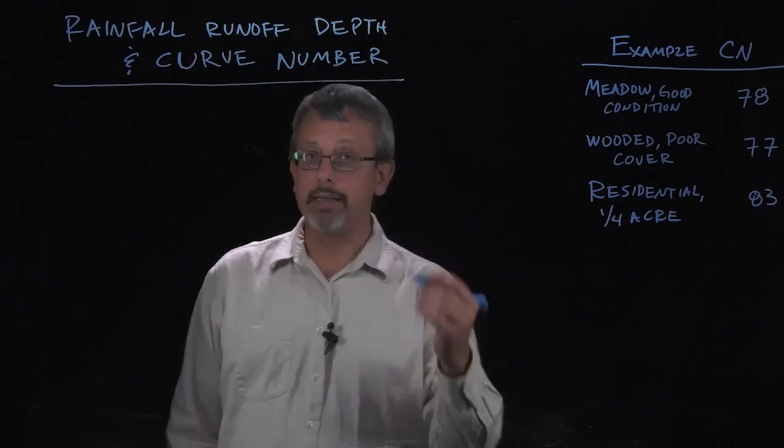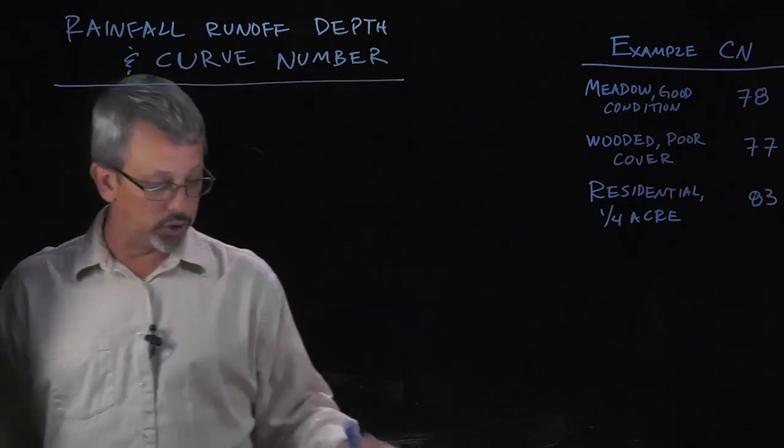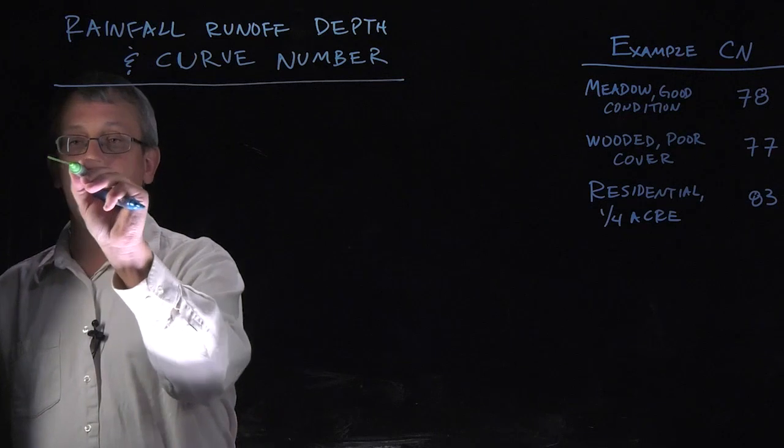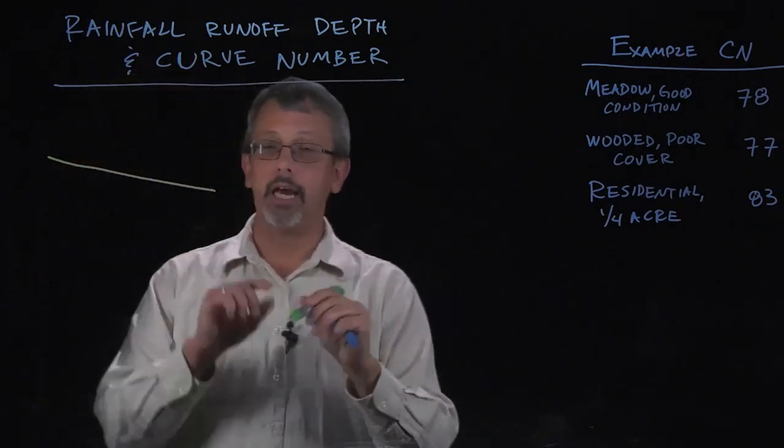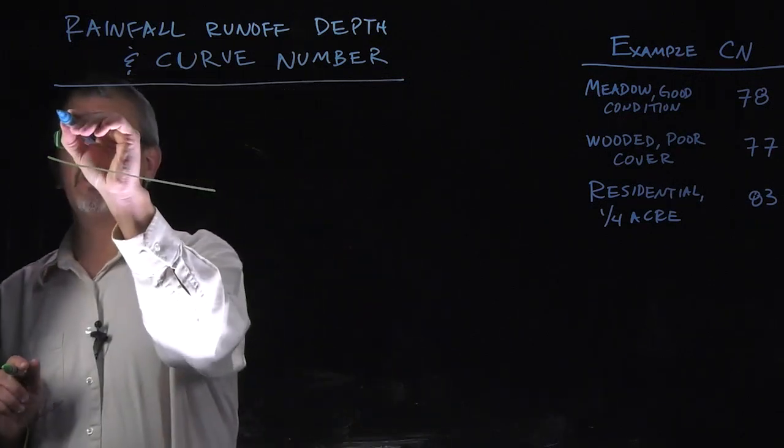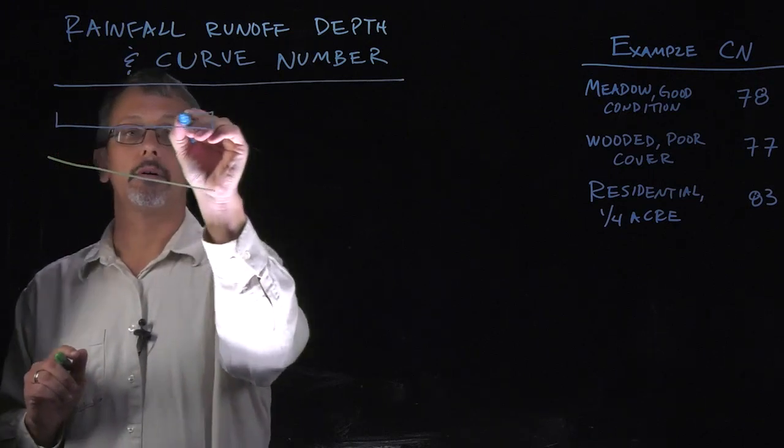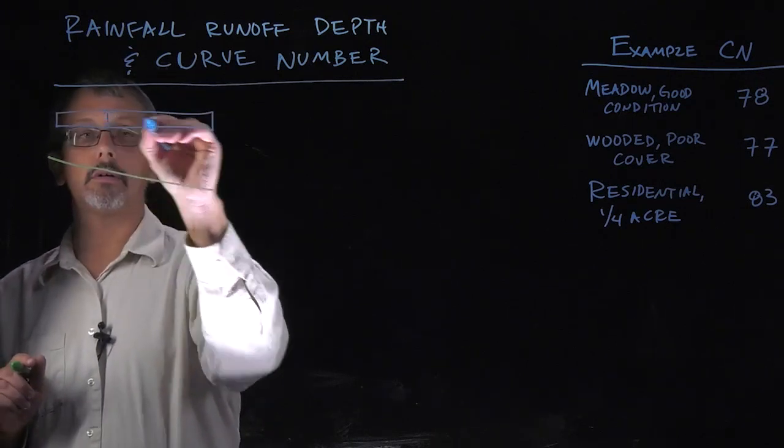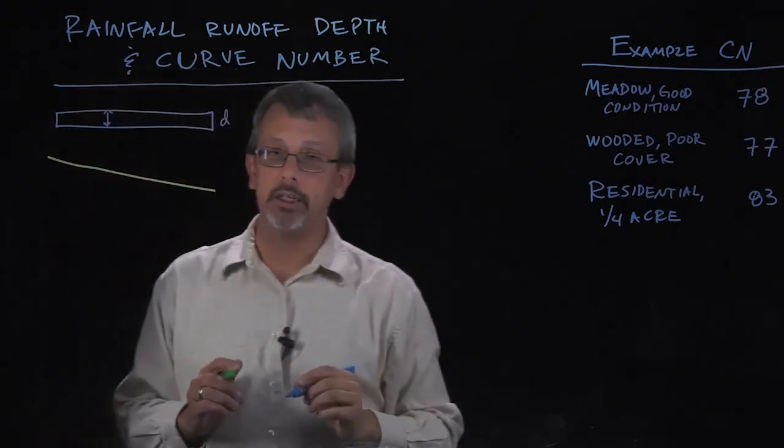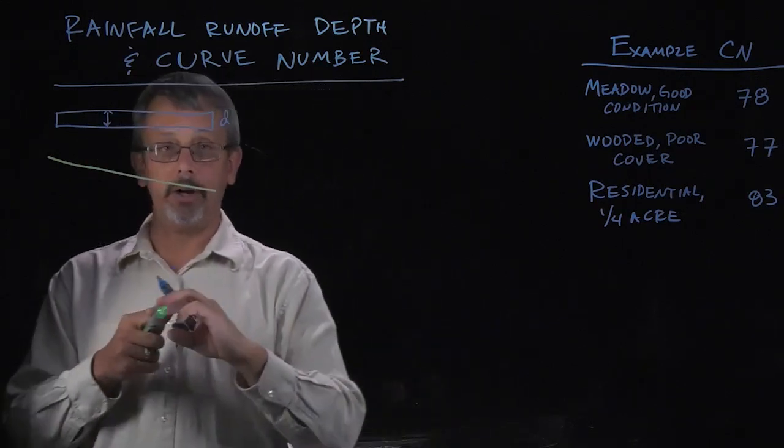In this particular case, we're going to assume that there is some area, and I'm looking at it from the side view, and that there is an overall depth of precipitation that is falling on this particular area.